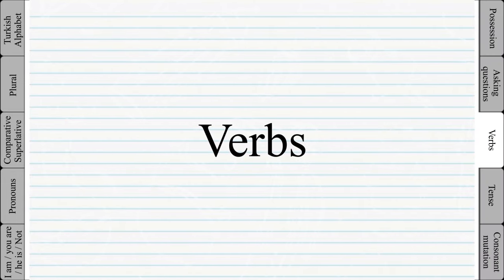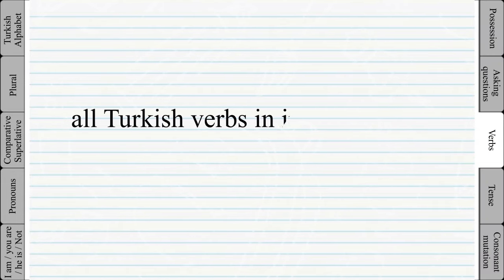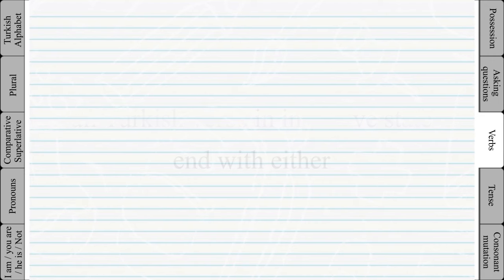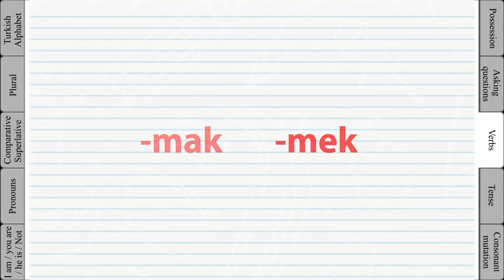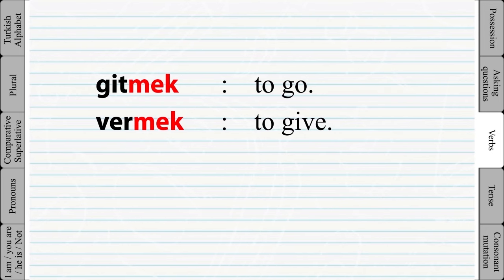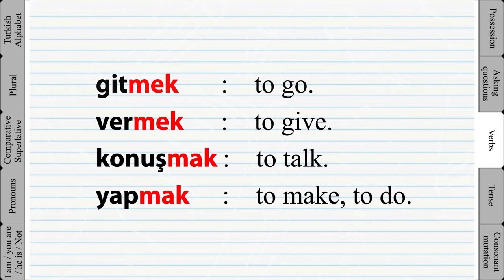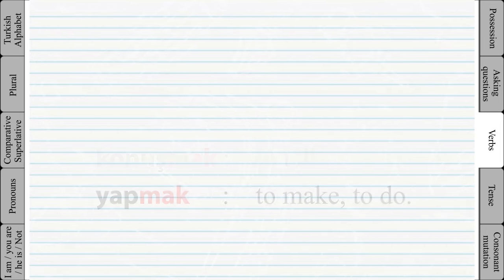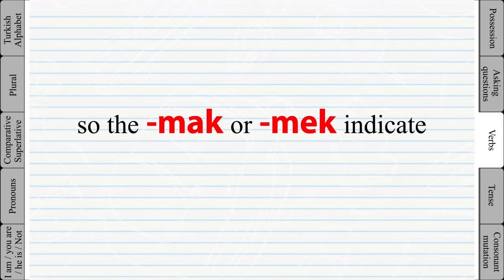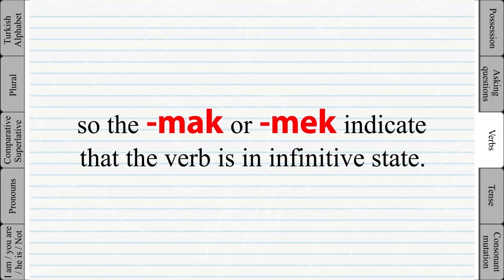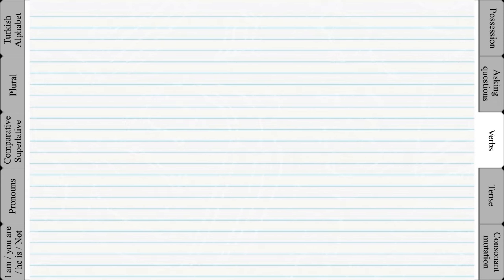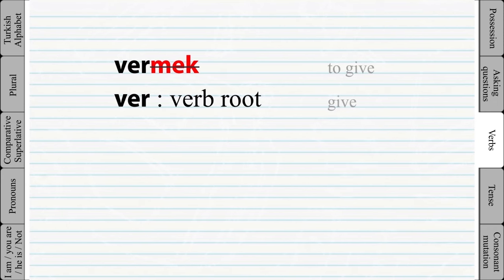Verbs. All Turkish verbs in the infinitive state end with either 'mak' or 'mek' — for example, 'gitmek', 'vermek', 'konuşmak', 'yapmak'. The 'mek' or 'mak' indicates that the verb is in the infinitive state. To get the root of a verb, just remove the 'mak' or 'mek' at the end.